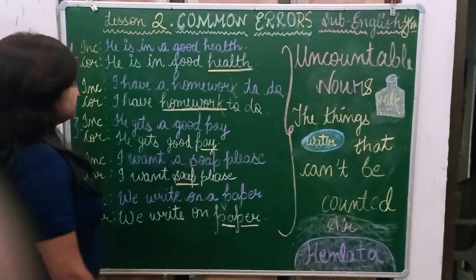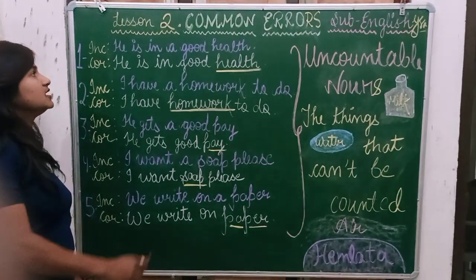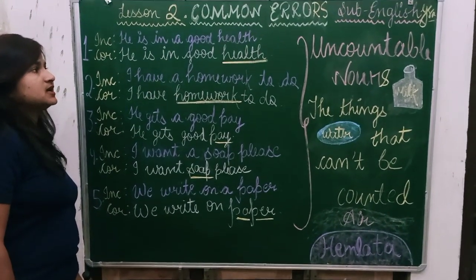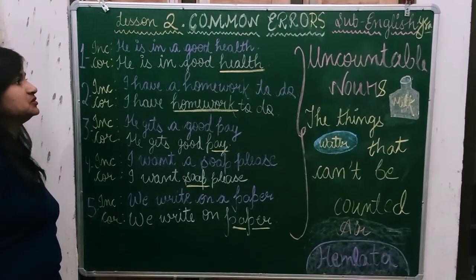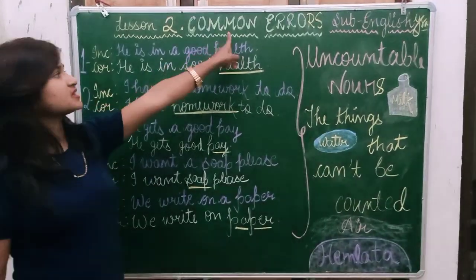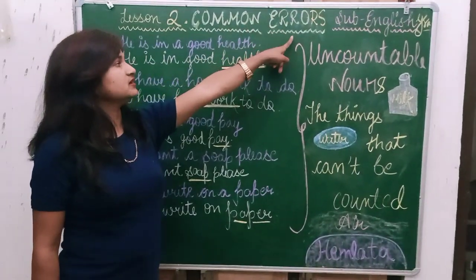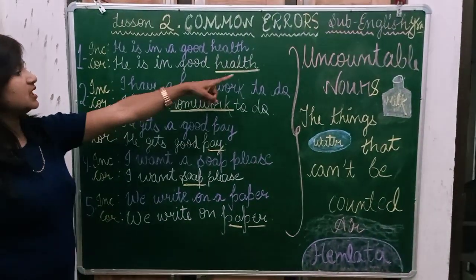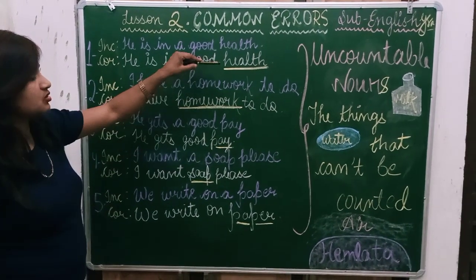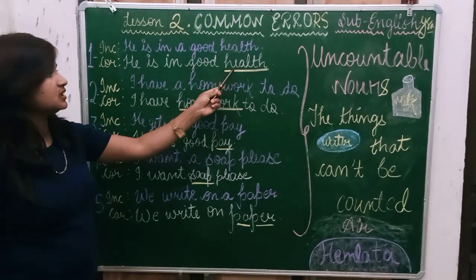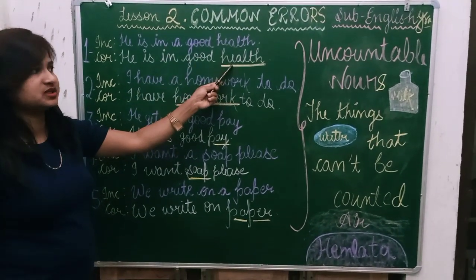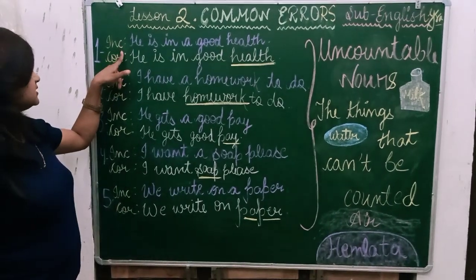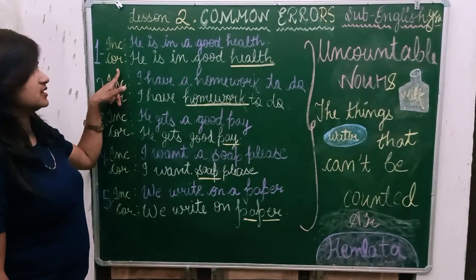Pertaining to this new lesson — Lesson 2: Common Error — that is, common errors with Uncountable Nouns. There are two sentences: Incorrect and Correct.